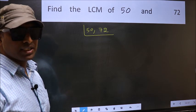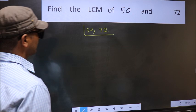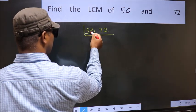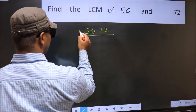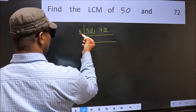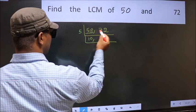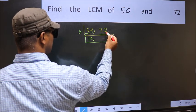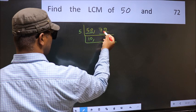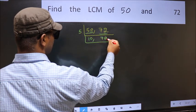Now focus on the first number, which is 50. The last digit is 0, so directly take 5. When do we get 50 in the 5 table? 5 times 10 is 50. The other number 72 — last digit is neither 0 nor 5, so it is not divisible by 5. So we write it down as it is.